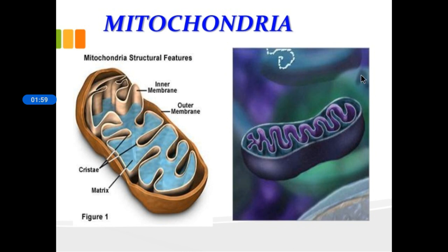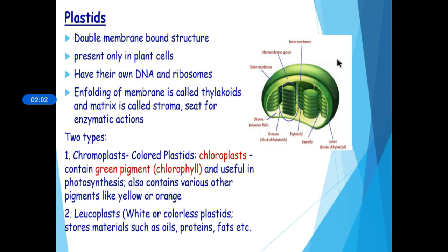Here you can see the picture of mitochondria. The next cell organelle is plastid. Plastids are present only in plant cells and are also double membrane-bound structures. They have their own DNA and ribosomes — so both mitochondria and plastids have their own DNA and ribosomes. The unfolding of the inner membrane is called thylakoids, and the matrix is called stroma.